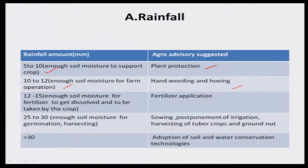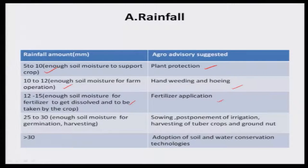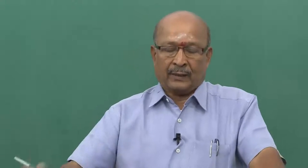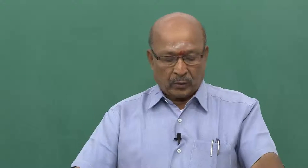When the rainfall is 12 to 15 millimeters, you go for fertilizer application. Applying fertilizer without soil moisture is a waste — it does not go into the soil profile and is not taken up by your plant. So 12 to 15 millimeters means go for fertilizer application. In irrigated agriculture, moisture is not a limiting factor because you can provide irrigation after applying fertilizer. But for dryland agriculture, you decide farm operations based on the rainfall received, and this knowledge is highly useful.